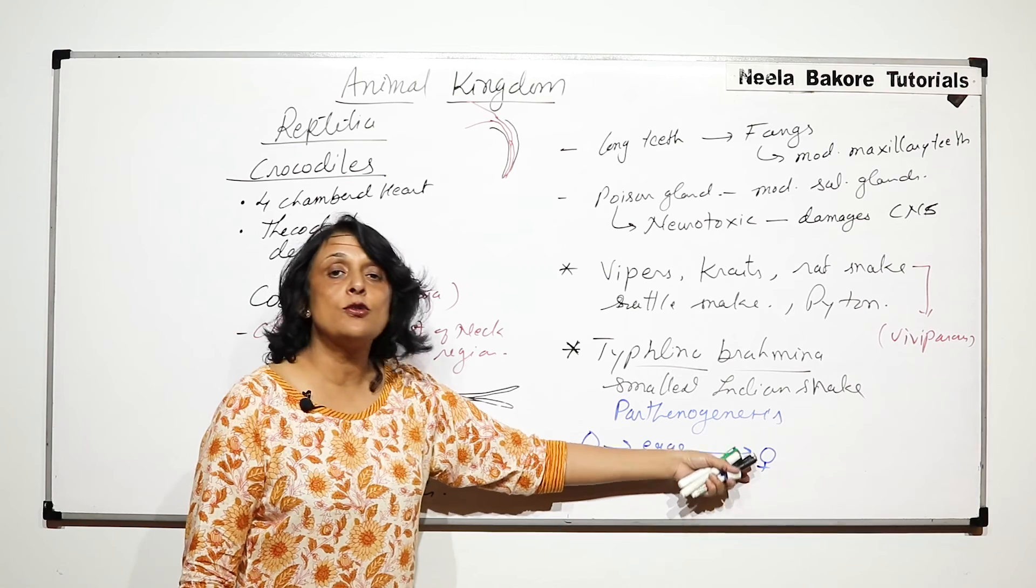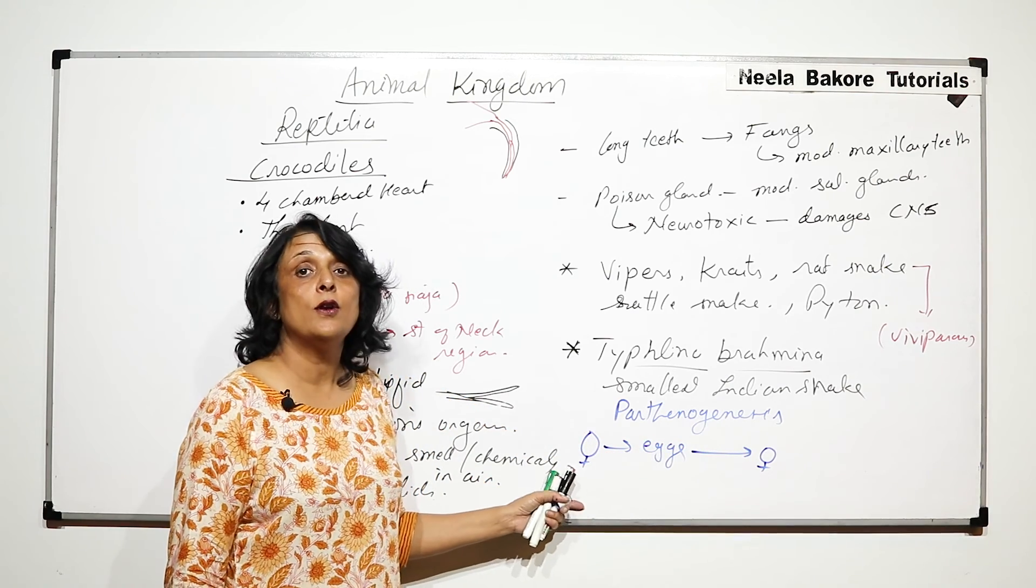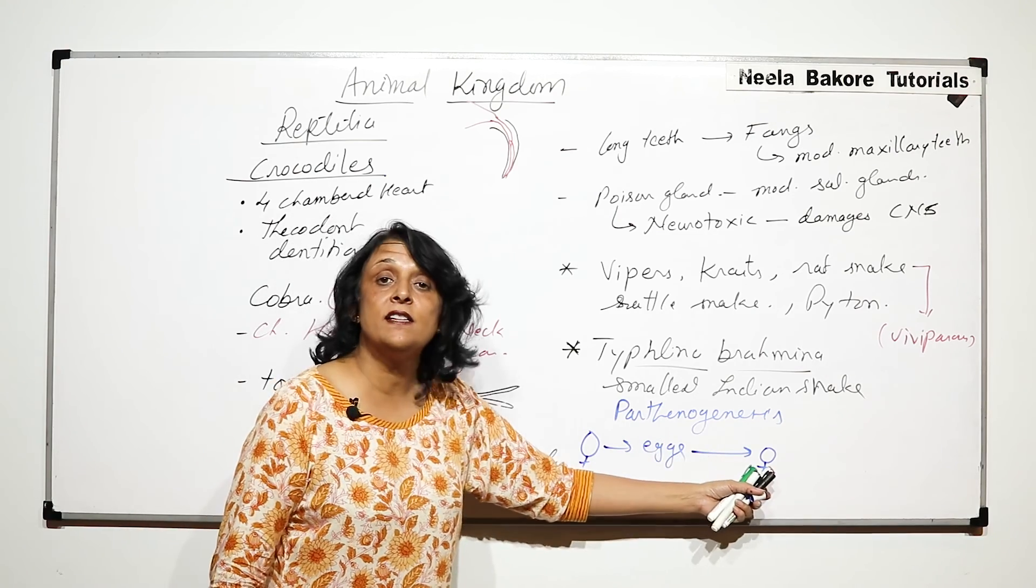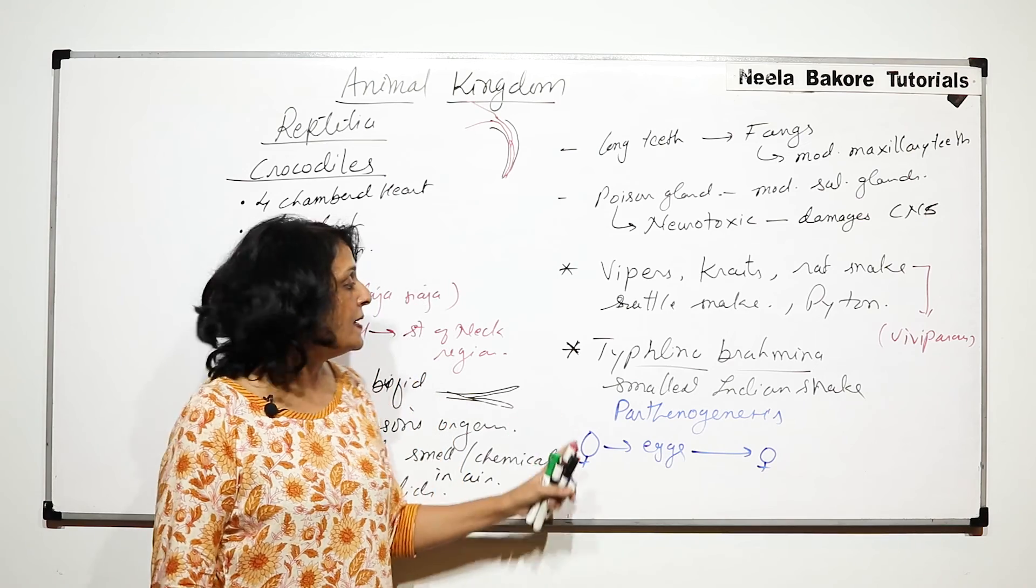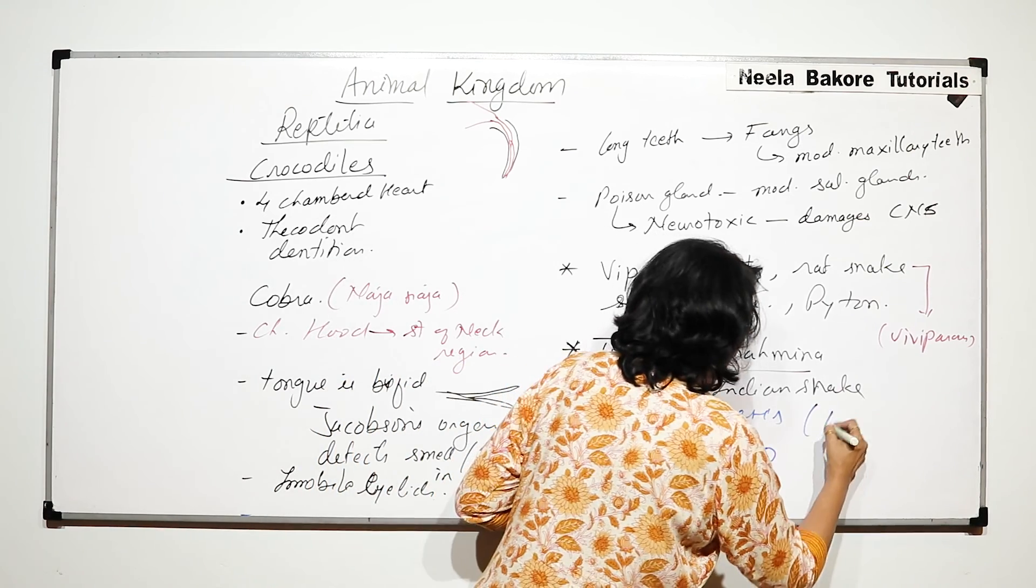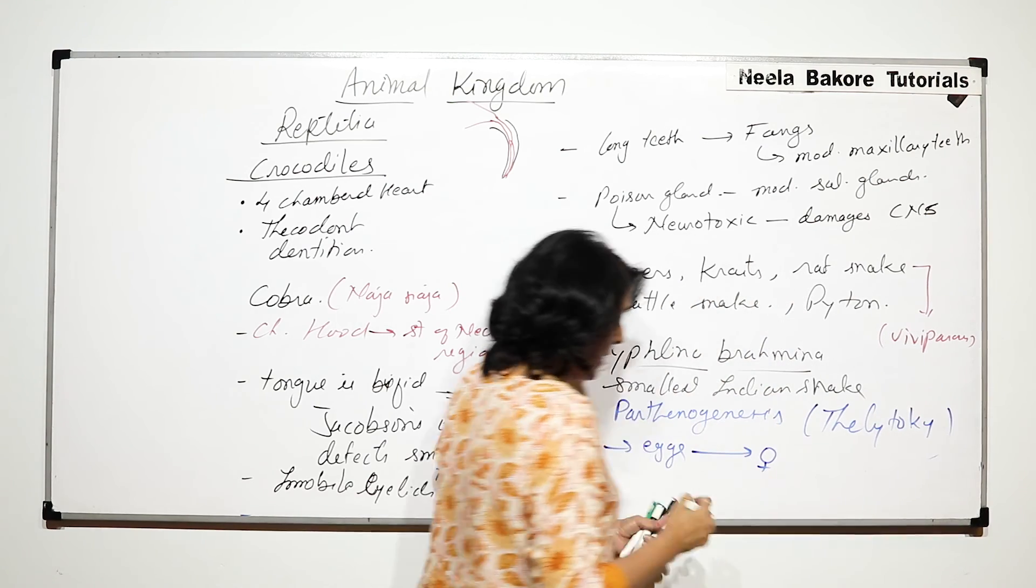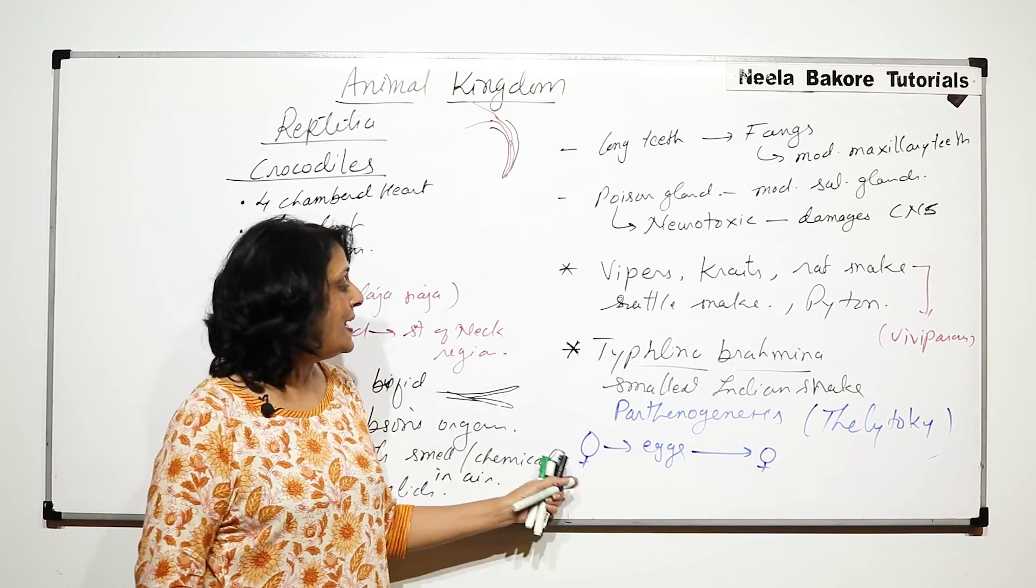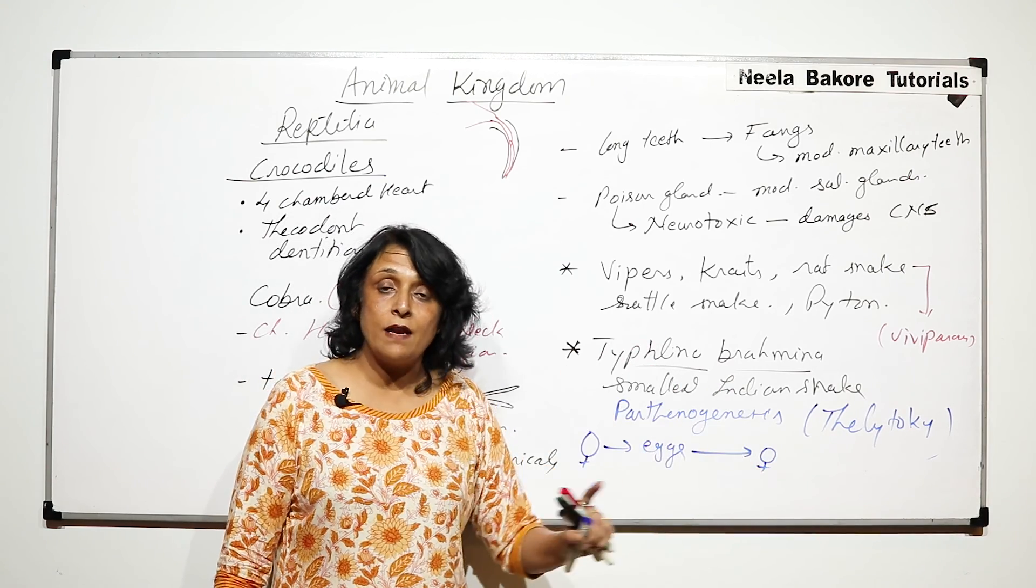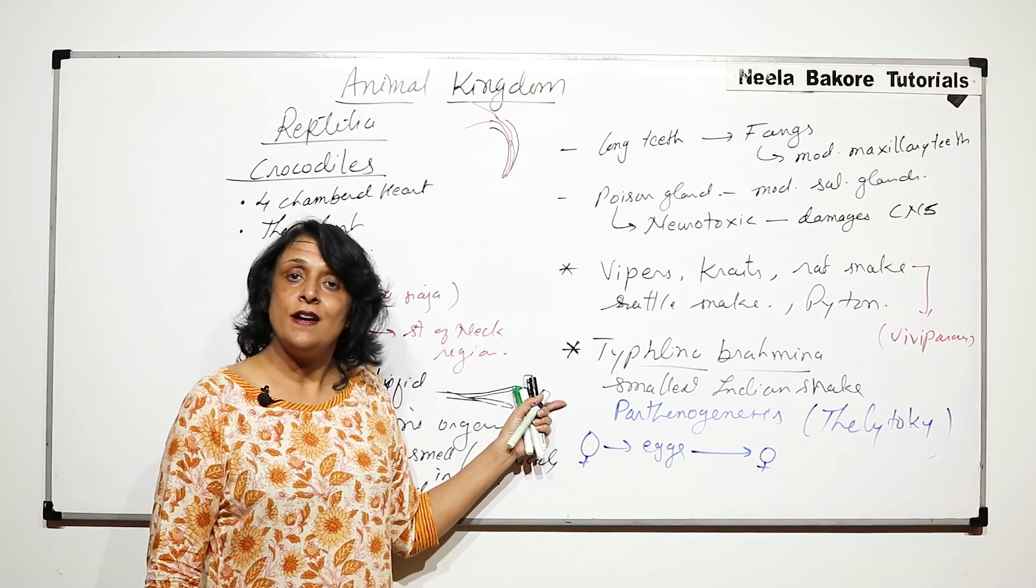The interesting part in Typhlina is that the female snake lays eggs, and these eggs without fertilization develop into females. These females grow and again lay eggs. That means here there are no males. So it's only females laying eggs without fertilization, the eggs developing into only females. This type of parthenogenesis is known as thelytoky, where females lay eggs that develop by parthenogenesis into females. So naturally, we don't find males in Typhlina.